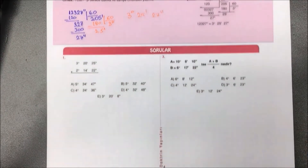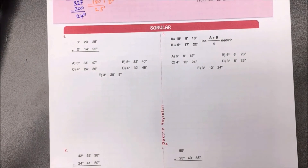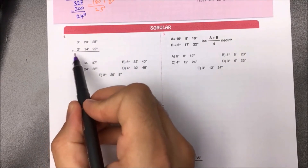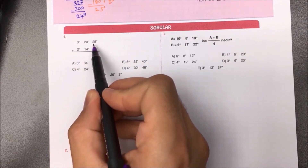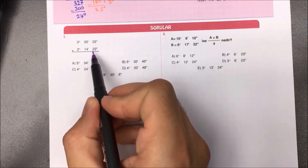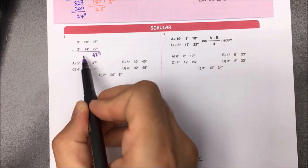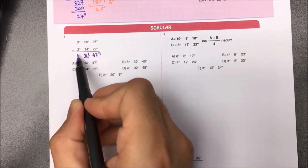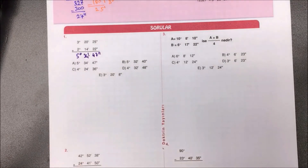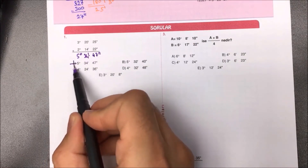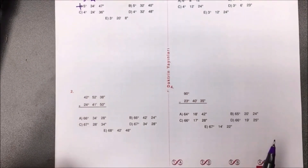Birinci soruda toplama işlemi yapıyoruz. Saniyeler: 25 + 22 = 47. Dakikalar: topladık 34. Dereceler: topladık 5. Sonuç: 5° 34' 47''. Aradığımız yanıt A seçeneğidir.